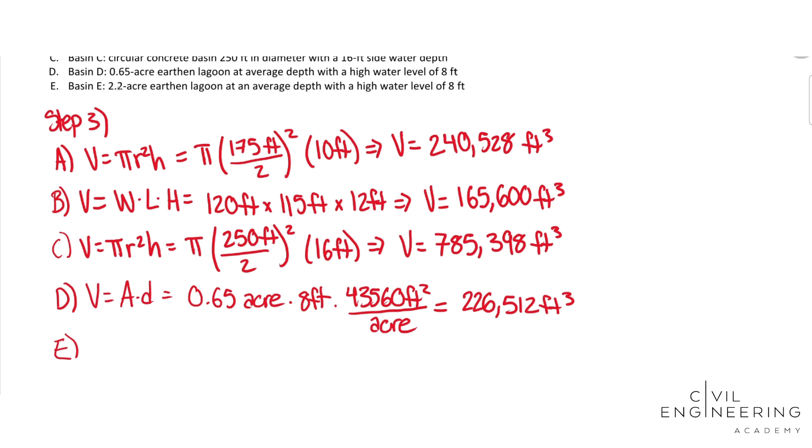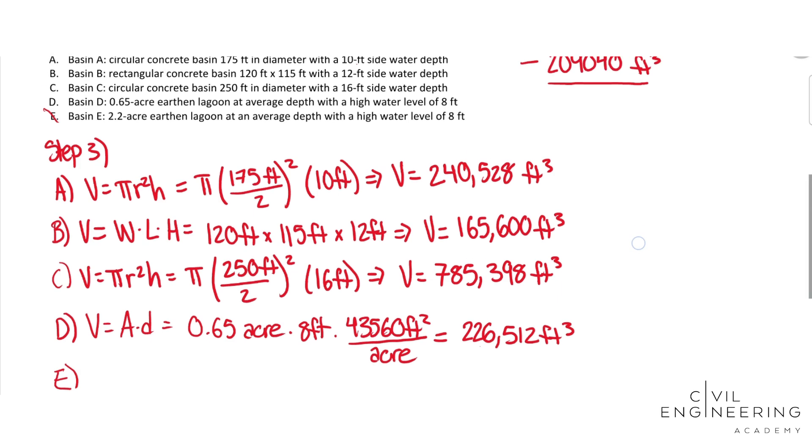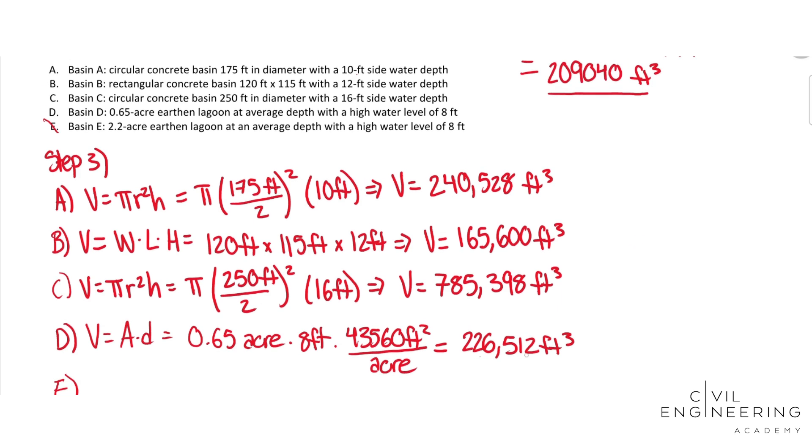And then E will be the exact same calculation as D. But as we can tell, this 2.2 acres area will be a lot greater than the 0.65. So if you're in a crunch during the test, you can pretty much eliminate option E because we already know it's going to be way higher than that, and this storage volume is already sufficient to store our water.